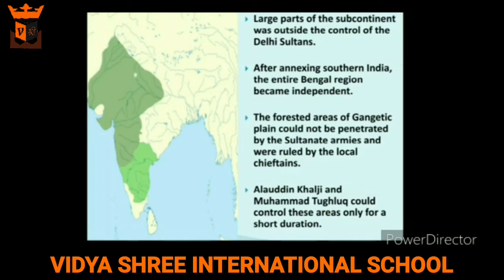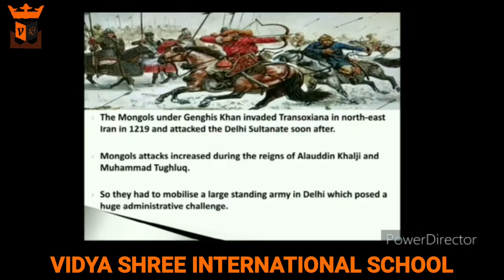It is important to remember that a large part of the subcontinent remained outside the control of the Delhi Sultans. It was difficult to control distant provinces like Bengal from Delhi, and soon after annexing southern India, the entire region became independent. As shown on the map, the green area was controlled by the Delhi Sultan and the white area was controlled by independent rulers. Alauddin Khalji and Muhammad bin Tughlaq could control these areas but only for a very short span of time.